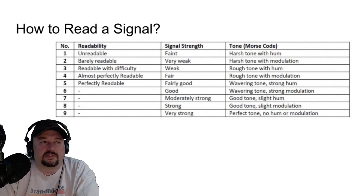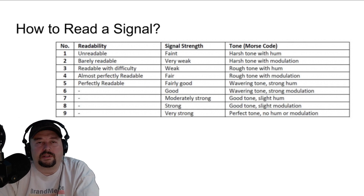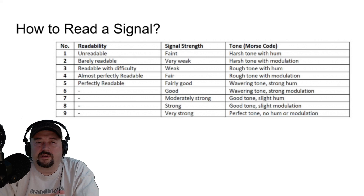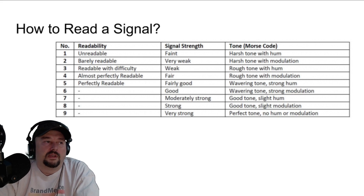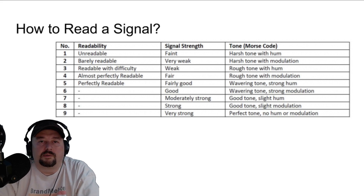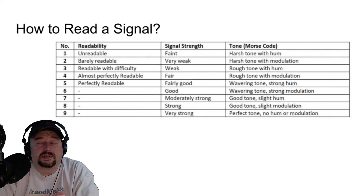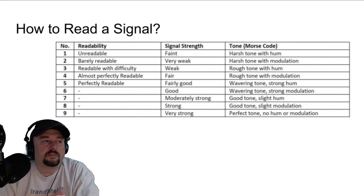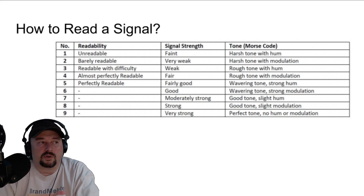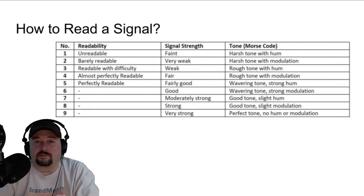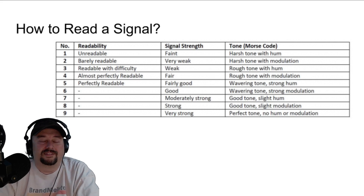When you take a look at the RST system, again, we have Readability, Signal Strength, and Tone. Readability is on a 5-point scale: 1 is unreadable, 2 is barely readable, 3 is readable with difficulty, 4 is almost perfectly readable, and 5 is perfectly readable. This is where we get into a little trouble, especially with folks newer at giving or receiving signal reports — it's subjective, not objective. It's up to the discretion of the person making the evaluation.